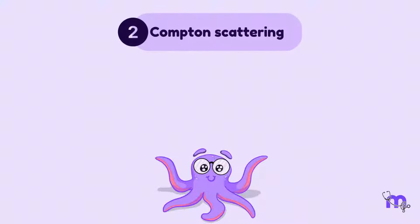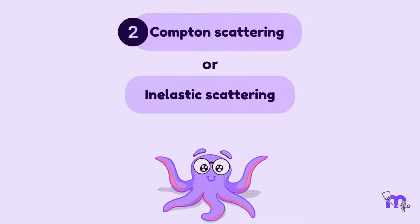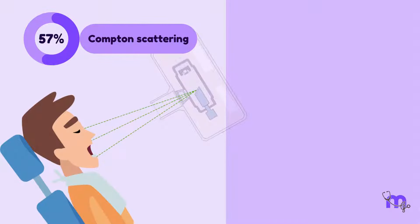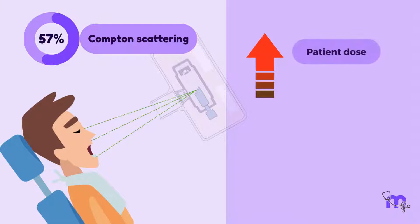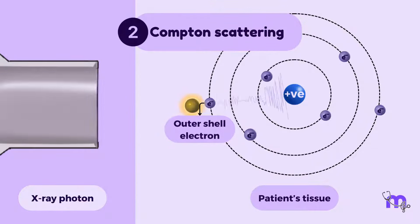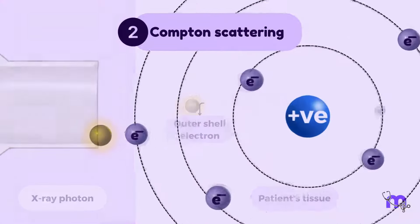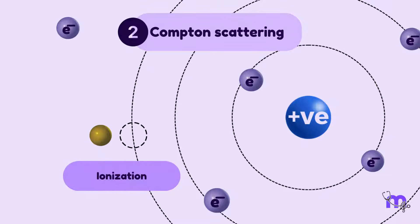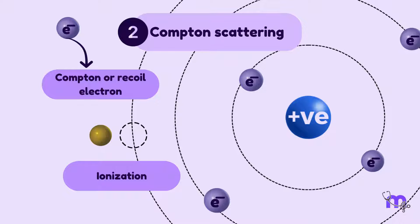Now let us move on to Compton or inelastic scatter. This is the most common but least desirable, making up about 57% of photon interactions in a dental beam. It negatively affects the patient dose, occupational dose, and image quality. The X-ray photons interact with the outer shell electrons that are loosely bound to the nucleus. On nearing the electron, the incident photon gives off some of its energy to the electron, knocking it out of its orbit. This process is called ionization and the electron is called the Compton or recoil electron.